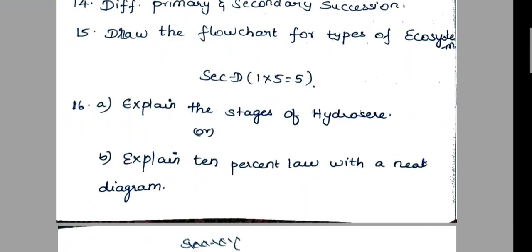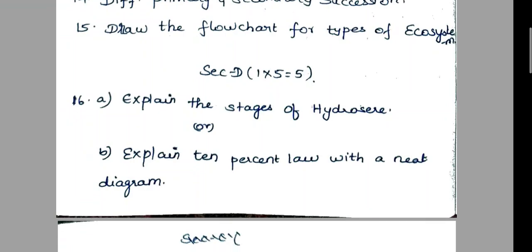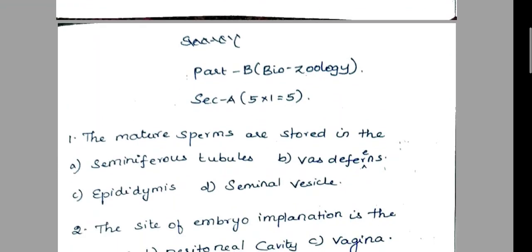5 marks: explain the stages of hydrosere, or explain 10% law with a neat diagram. So 25 marks — Botany.